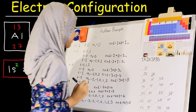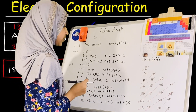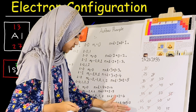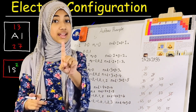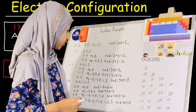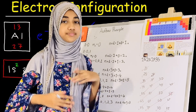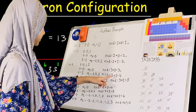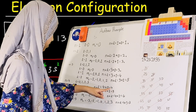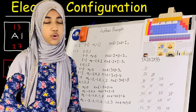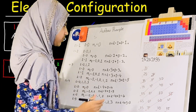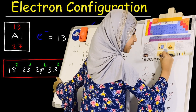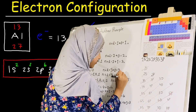We place an X next to 3s. Now the next sum is 4. Again we have a tie: n equals 3 plus l equals 1 gives 4, and n equals 4 plus l equals 0 also gives 4. n equals 3 is less than n equals 4, so we go with n equals 3 first, and l equals 1 means a p orbital: we write 3p. Mark it done, then go to n equals 4 with l equals 0, which is 4s.